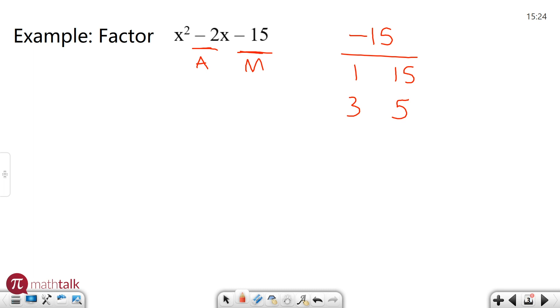Well 1 and 15 are out because those are too far apart. But if you look at 3 and 5, well 5 minus 3 is positive 2. So if I do 3 minus 5 I get the opposite. If I take positive 3 minus 5 I get negative 2, which is what I want. So these are the two numbers I'm going to use for my binomials.